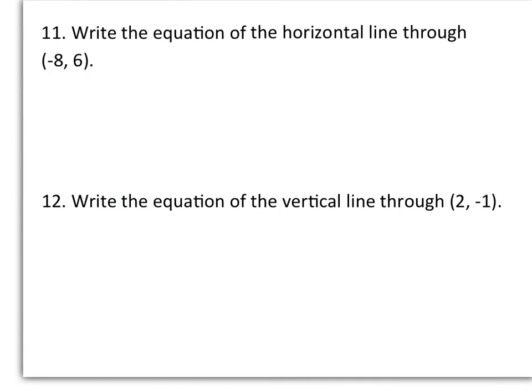Alright, our last two examples have to do with writing equations for horizontal and vertical lines. In number 11, we want to write the equation of the horizontal line through negative 8, comma 6. Now remember, horizontal lines are when y equals a number, and here my y value is 6, so my equation will just be y equals 6, and I'm done. And then in 12, if I want to write the equation of a vertical line through 2, negative 1, so vertical lines have to deal with our x value, so it's going to be x equals 2. And that's all.